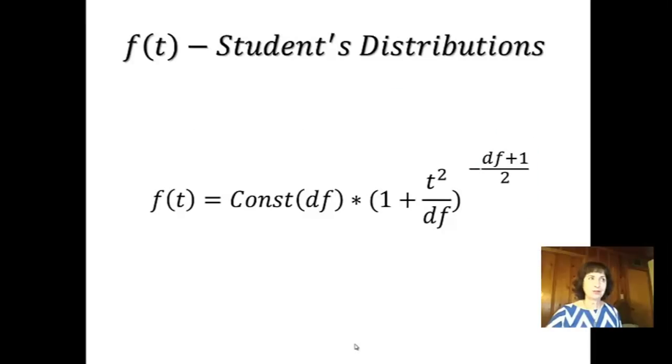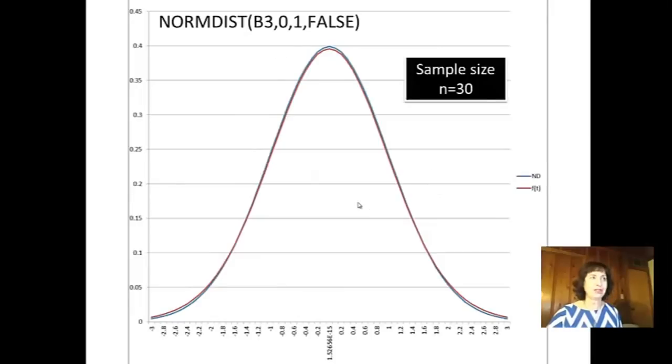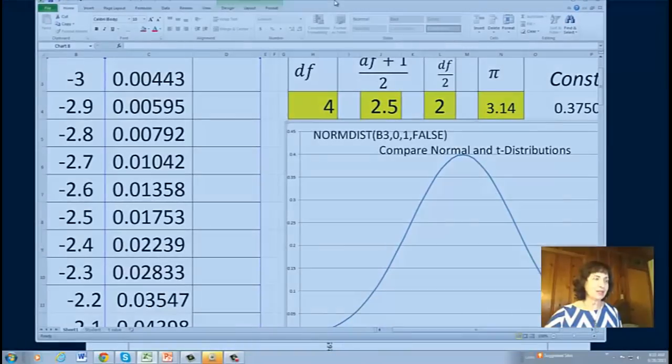So, this is how the student t-distribution looks like. And this is how it looks like if you put the real constant of degree of freedom. When I say constant, this constant will change as we change the size of our samples in the sampling distribution. And you will see that for n equals 30, the normal distribution, in this case with blue and the red t-distribution almost coincides. Let's do this with Excel.